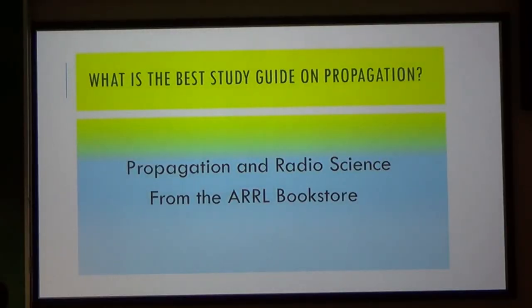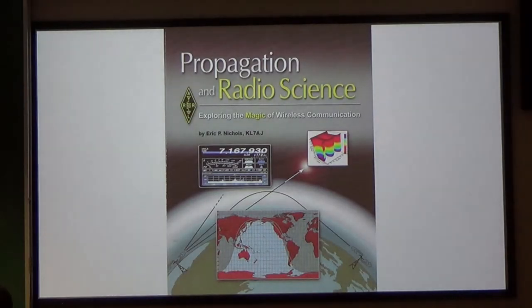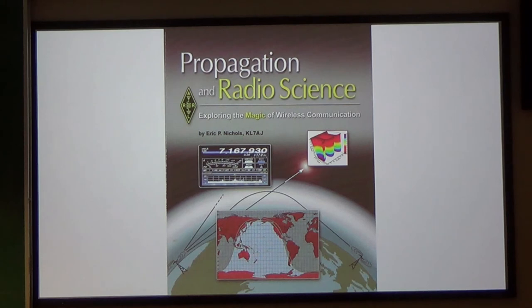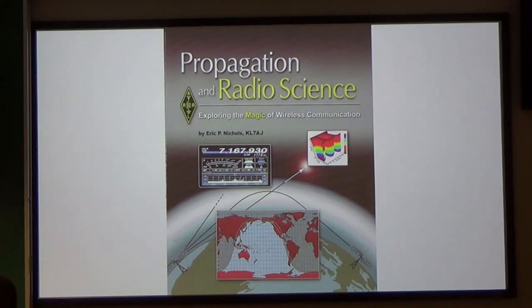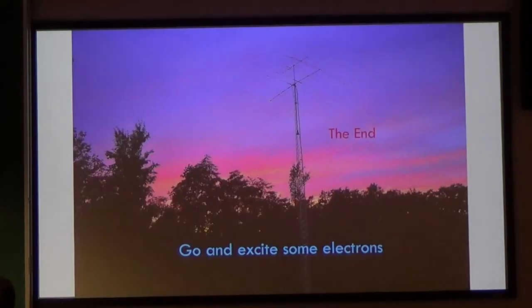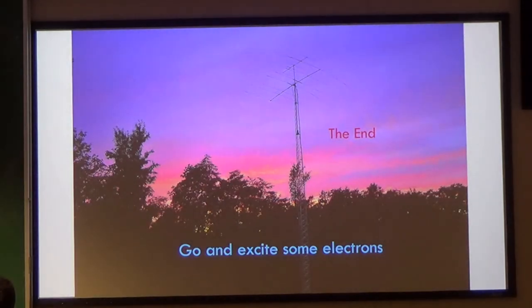The best study guide on propagation is 'Propagation and Radio Science' — a great manual. You can get it from the ARRL bookstore or Amazon.com. I recommend Amazon because you avoid the $7-something shipping charge; the book is $24.95 on both, but Amazon offers free shipping if you add another item to reach $25. And that's the end of the presentation — thank you.